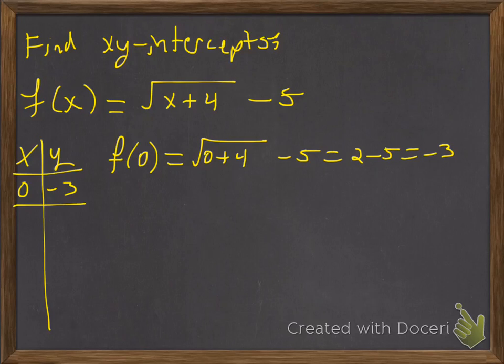So now, to find the x intercept, that means the y is equal to 0. So again, remember, y is f of x. And so we're going to replace the entirety of f of x with 0 and we'll solve for x.